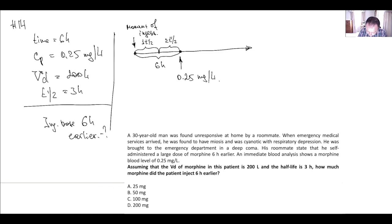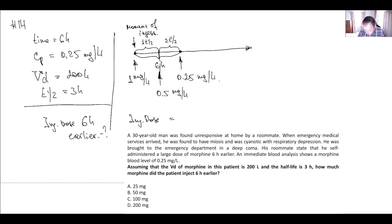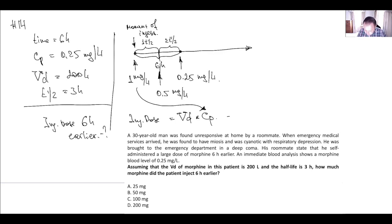After one half-life back from the measurement point, plasma concentration is 2 times higher: 0.5 milligrams per liter. After one more half-life back, we reach the ingestion moment, where plasma concentration was 1 milligram per liter. The ingested dose is calculated from the volume of distribution equation: volume of distribution multiplied by plasma concentration at the moment of ingestion. So ingested dose equals 200 liters times 1 milligram per liter, which gives 200 milligrams.